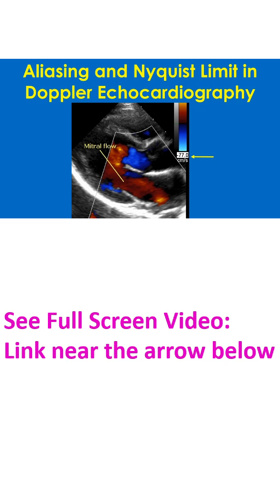The Nyquist limit of the color Doppler is displayed at the upper and lower ends of the color bar, which may be displayed either on the right upper corner or left upper corner. Here, the flow away from the transducer in blue color has a Nyquist limit of minus 77 cm per second. The Nyquist limit for the flow towards the transducer is not seen in this image, as it has been cropped below that level.